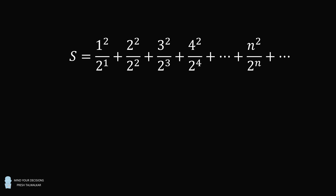What is the value of the following infinite series? S is equal to 1 squared over 2 to the power of 1, plus 2 squared over 2 to the power of 2, plus 3 squared over 2 to the power of 3, plus 4 squared over 2 to the power of 4, and so on, where the general term is n squared over 2 to the power of n. What is the value of S?